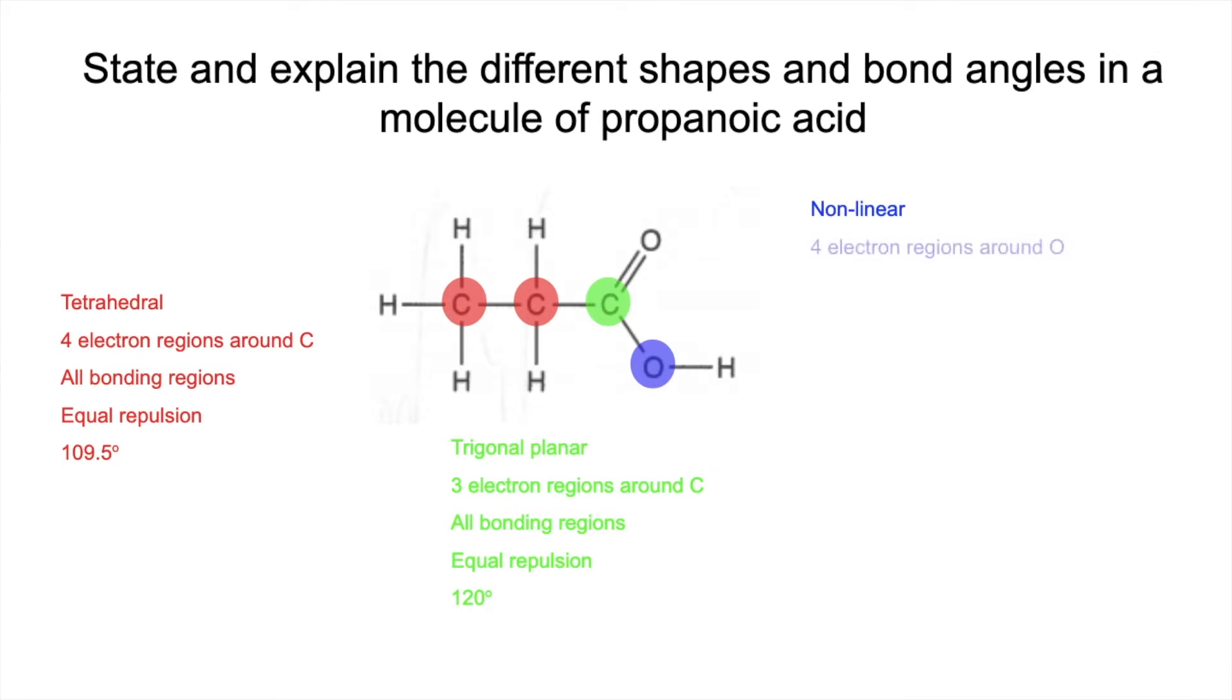So we'll finish with this oxygen here, that's non-linear. We've got four electron regions around that oxygen, and that's because there are two bonding regions and two lone pairs on that oxygen. So now we have unequal repulsion, and I'm just going to give the order of repulsion strength.